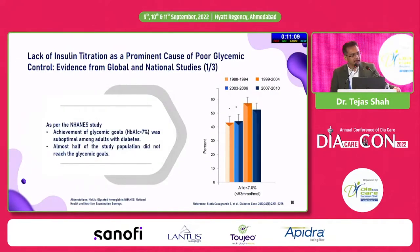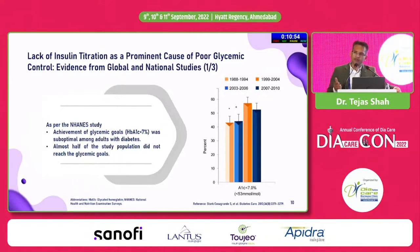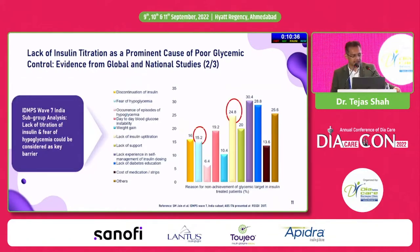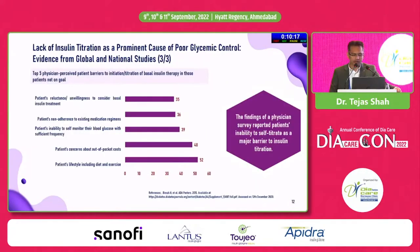Data from the NAND study compared patients from 2007–2010 versus 1994–1998. There was an improvement overall — almost a 50–51% reduction in patients who did not achieve good HbA1c control — but still almost 49–50% of patients remained uncontrolled in spite of receiving the best possible therapy including insulin. The IDMPS Wave 7 data subgroup analysis, an Indian survey, found that lack of insulin titration and fear of hypoglycemia were the two main contributory factors for why patients remained uncontrolled in spite of being on good insulin therapy.